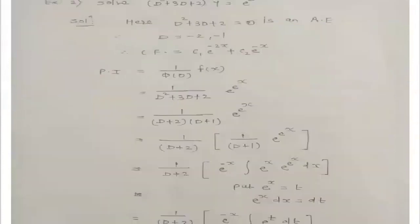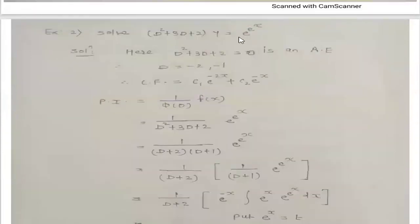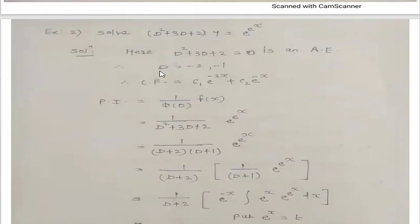Second example of the general method: (D² + 3D + 2)y = e^(e^x). This is the reduced form of LDE, so φ(D) = D² + 3D + 2. Setting it equal to zero gives the auxiliary equation, a quadratic with roots D = −2 and D = −1 — real and distinct. Therefore, the complementary function is CF = c₁e^(−2x) + c₂e^(−x).